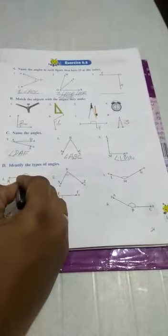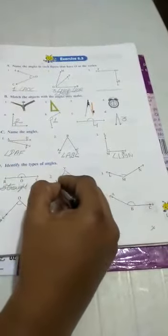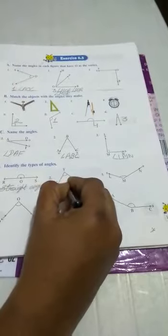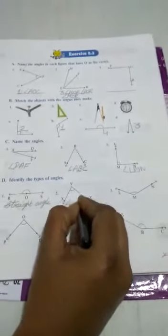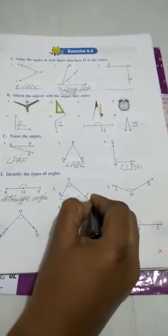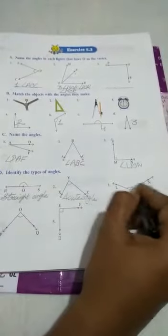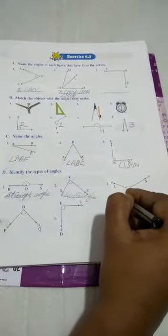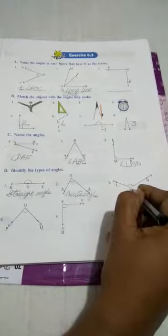Second one is small angle, that is acute angle. Third one, the angle is big. So, it is obtuse angle.